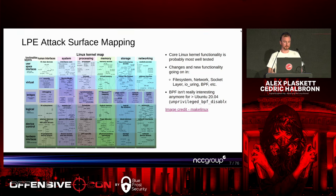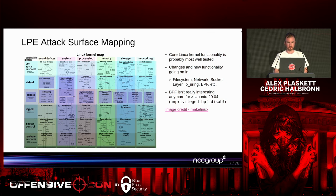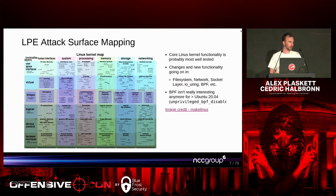For vulnerability identification, we took the approach that core OS functionality — things like the scheduler, interrupts, and memory mapping subsystems — are probably less interesting for finding bugs. Things like the file system, networking stack, and socket layer are all attack surfaces exposed from a Linux privilege escalation perspective. New components like io_uring have been introduced relatively recently and are subject to quite a lot of changes. In the past BPF was interesting, but these days in Ubuntu, unprivileged BPF is disabled.